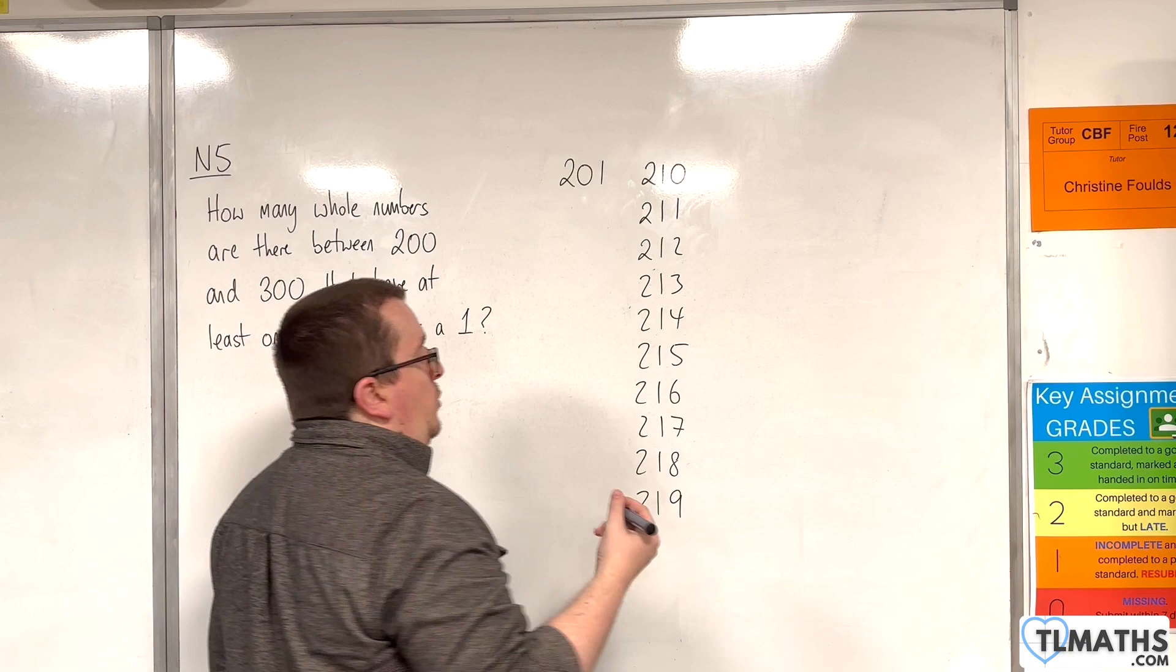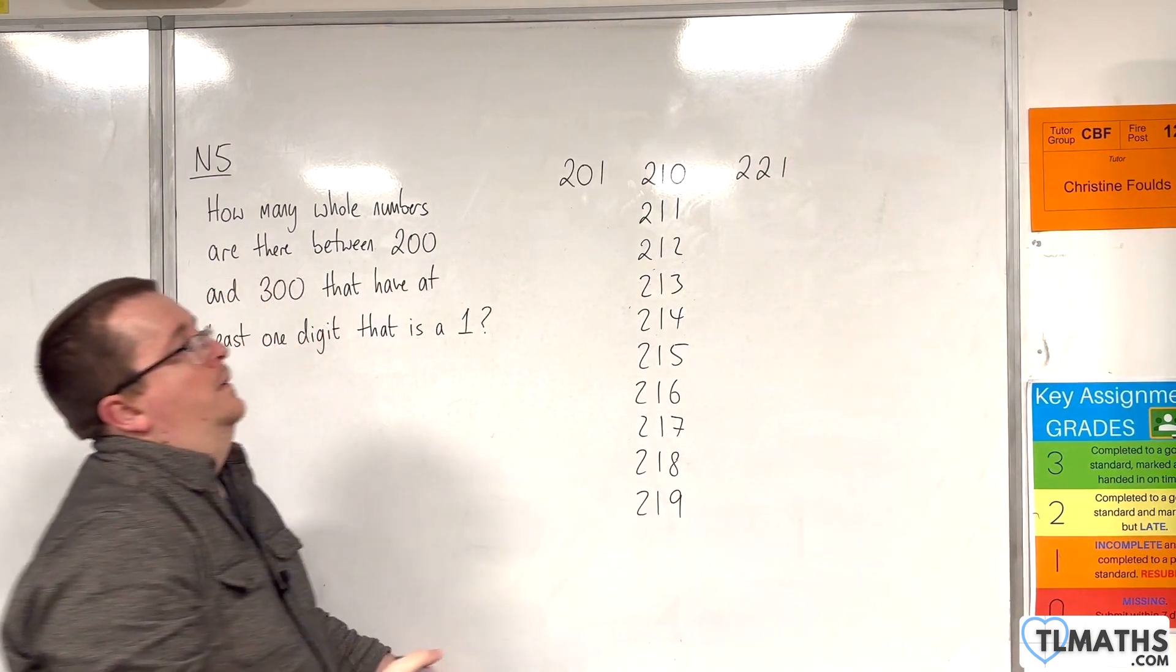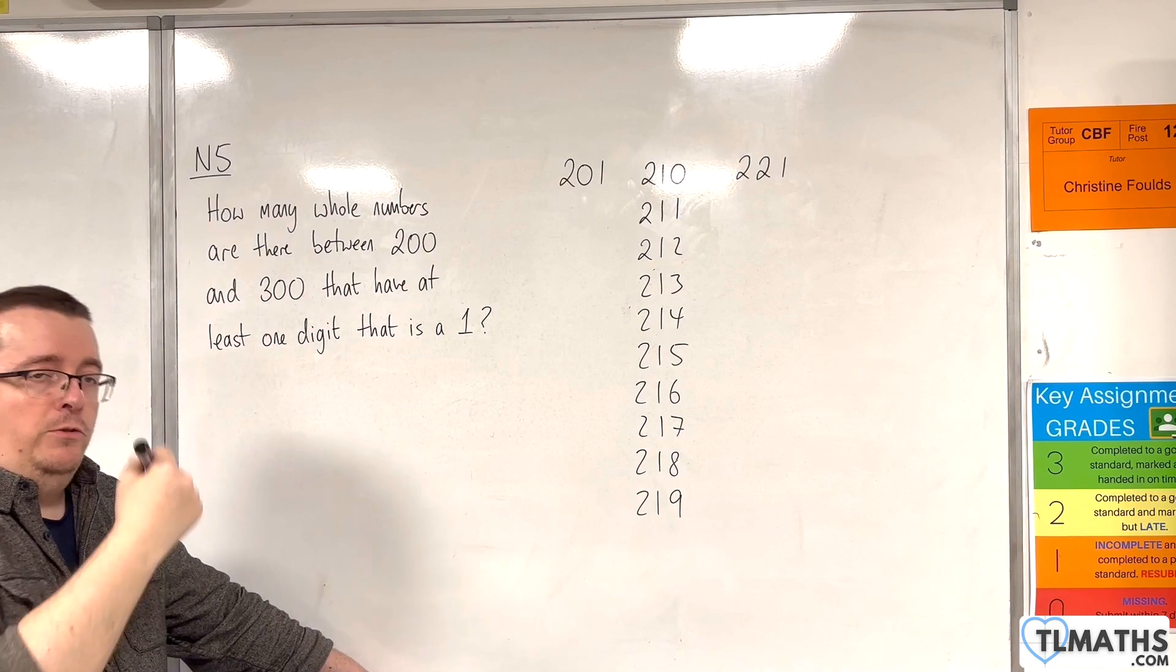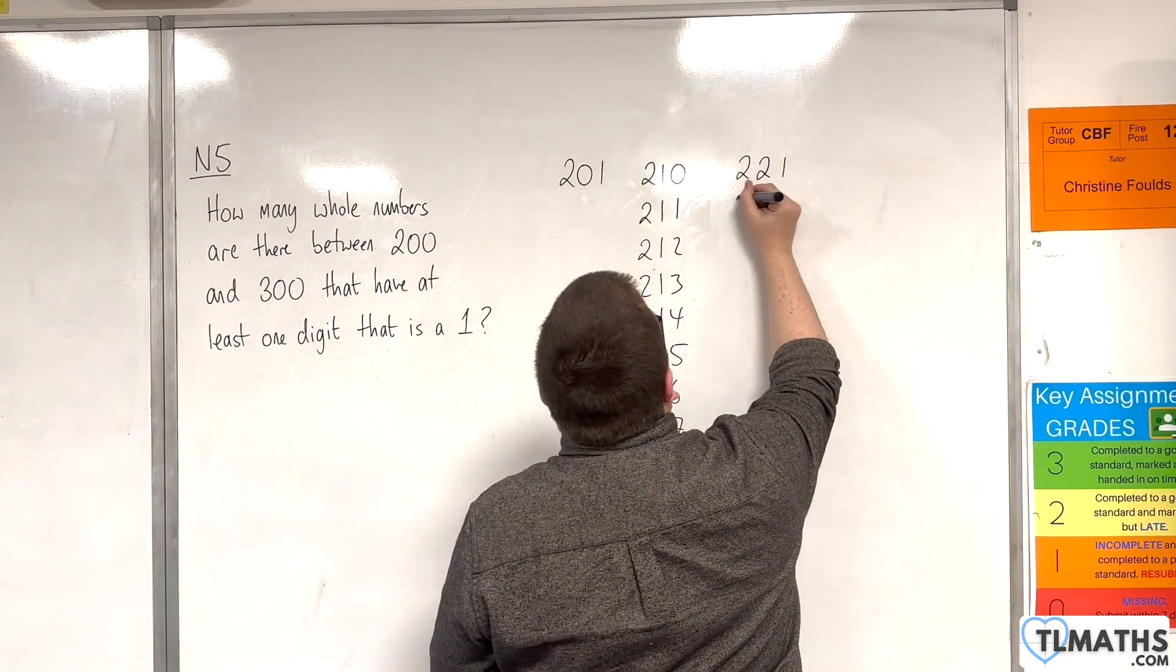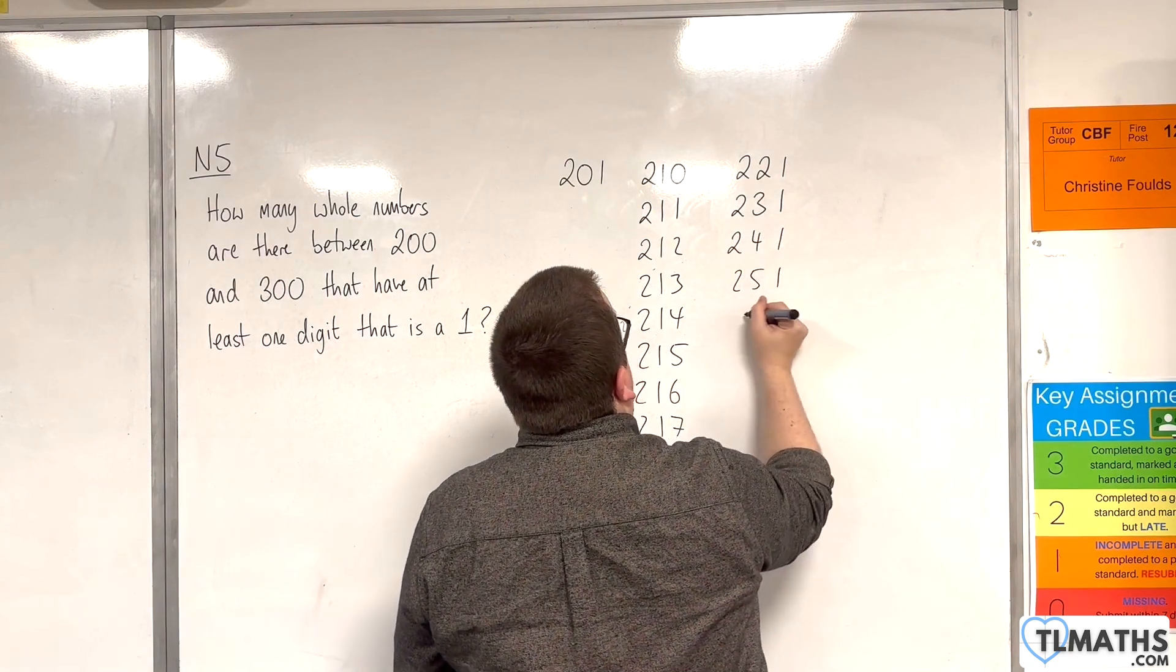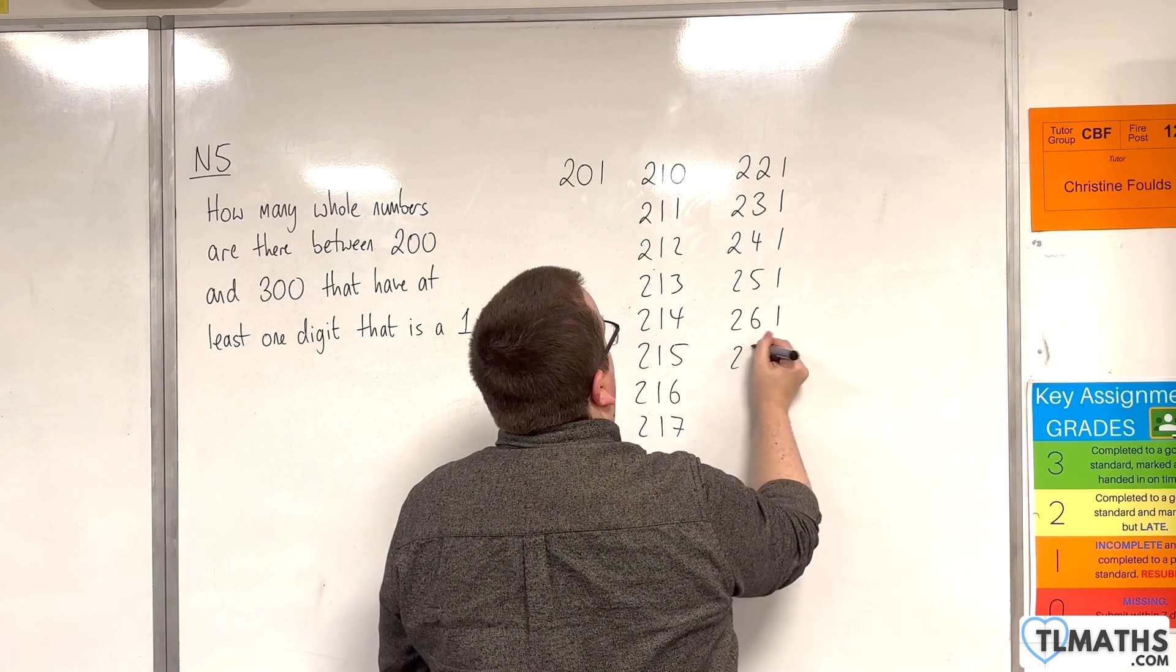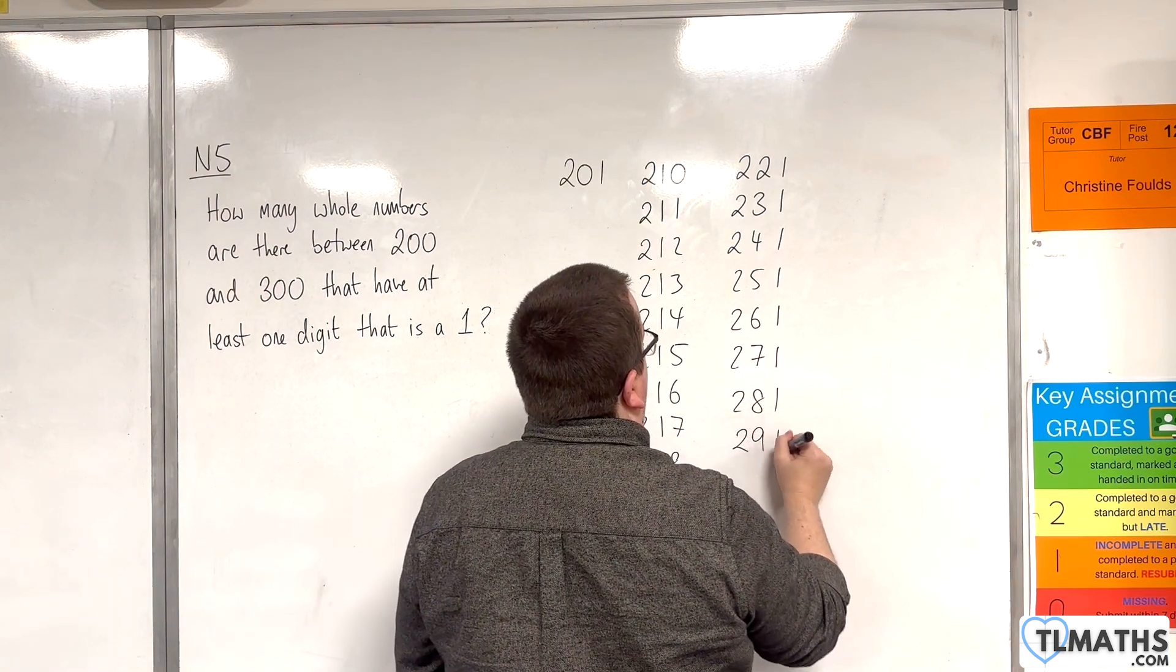Then the next one would be 221. Then 222, 223, 224, 225, all the way up to 231. And then 241, 251, 261, 271, 281, and 291.